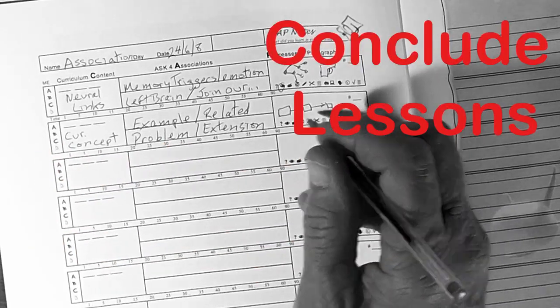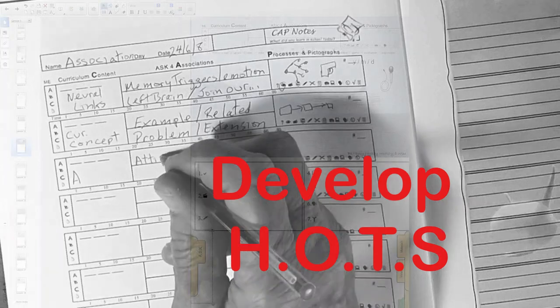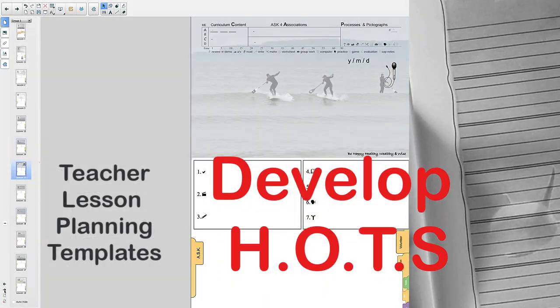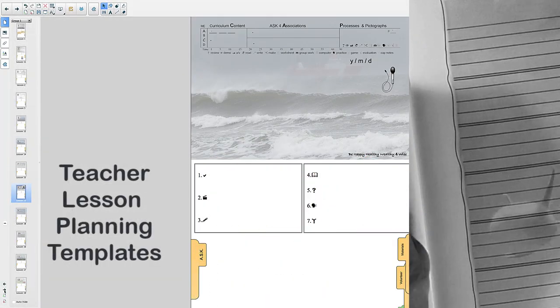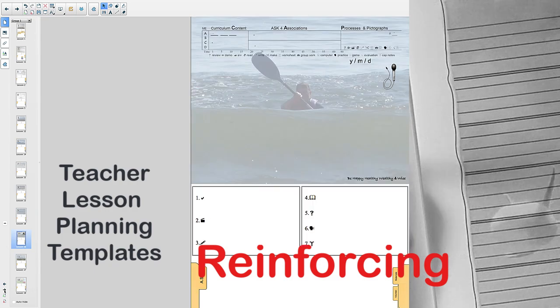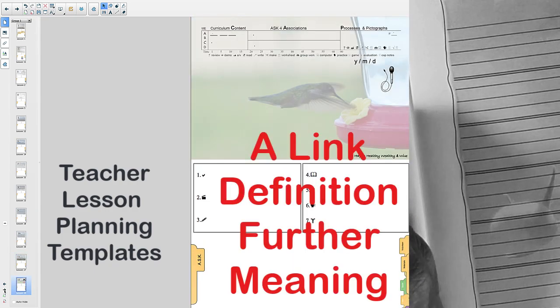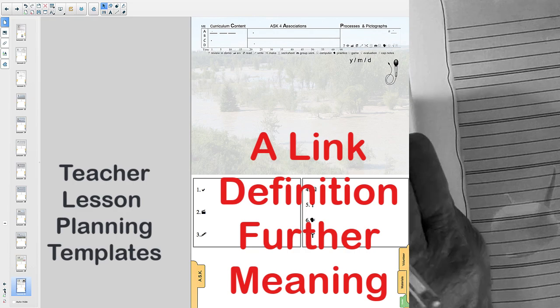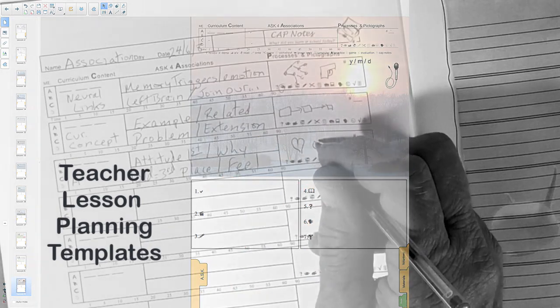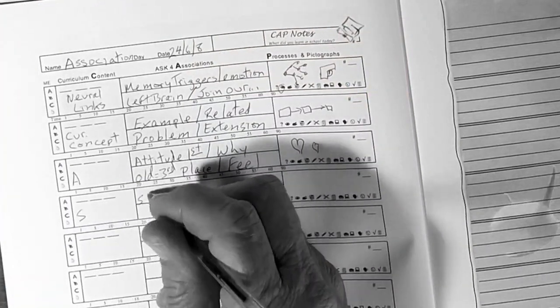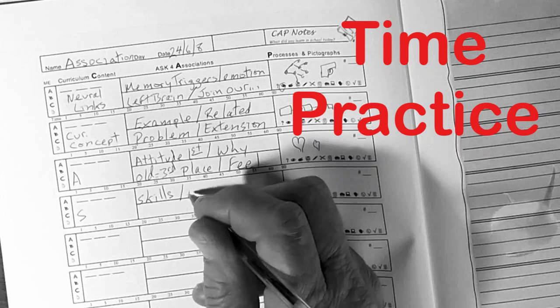When students synthesize and summarize key ideas to conclude their lessons, they develop higher-order thinking skills, reinforcing through repetition what was taught. And this is good. An association is a link, something that gives definition and further meaning to the curriculum concept.